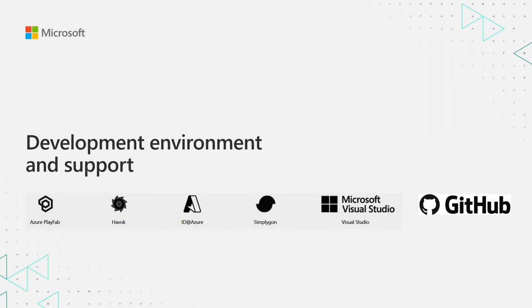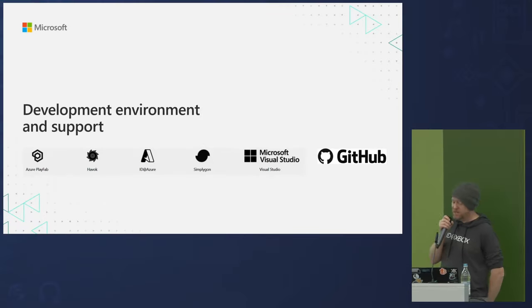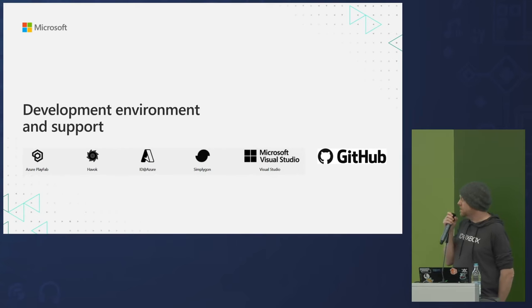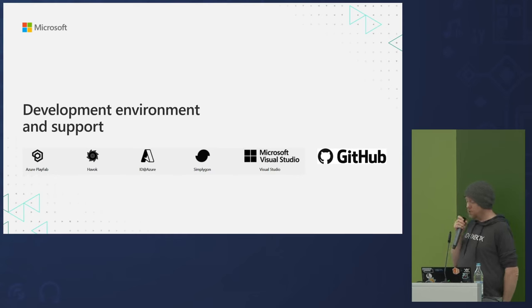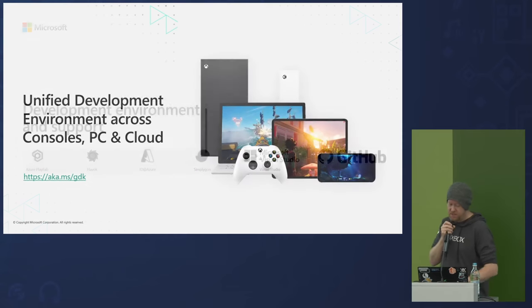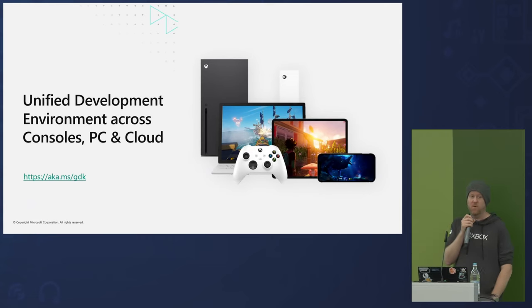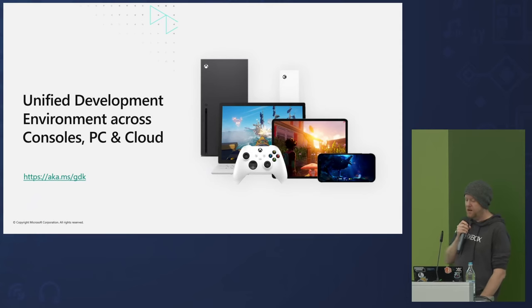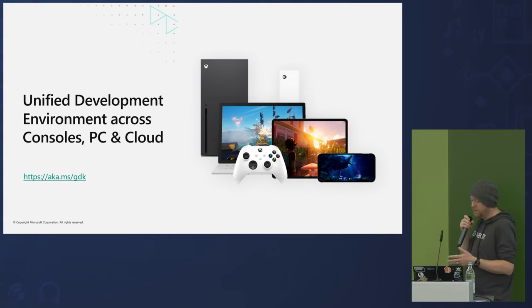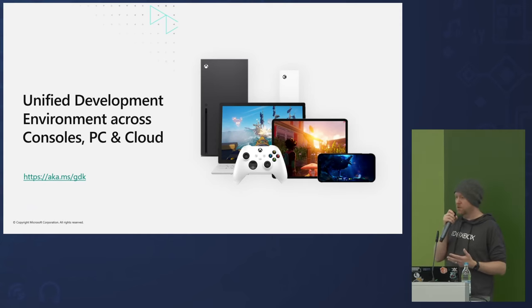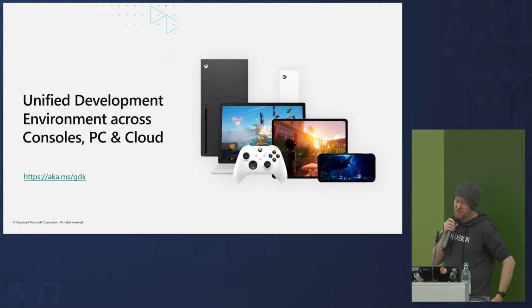Let's talk about the development environment. We offer a huge range of tools that can help you make games today — everything from cloud infrastructure to physics to art tools, Visual Studio, and GitHub. We also offer the GDK: our game development kit for Xbox, Windows PC, and the cloud. Our ecosystem covers Xbox One, Xbox Series, the Windows Store, and cloud — and the GDK is the same across all of those. You only have to write sign-in once, write achievements once, and then export to each endpoint.